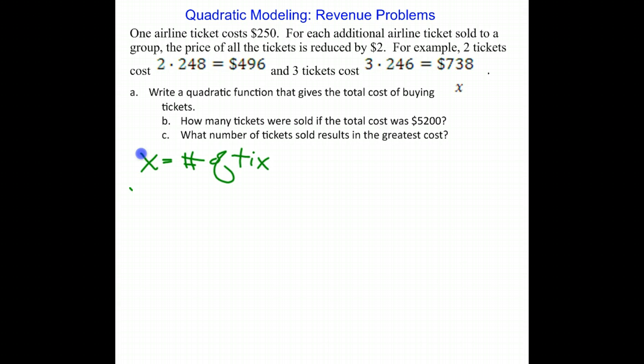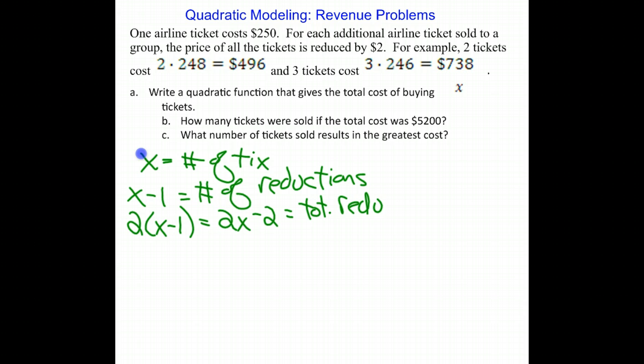let's remember that X stands for the number of tickets. So X - 1 is the number of reductions because it doesn't include the first ticket. So that means 2 times (X - 1) or 2X - 2,